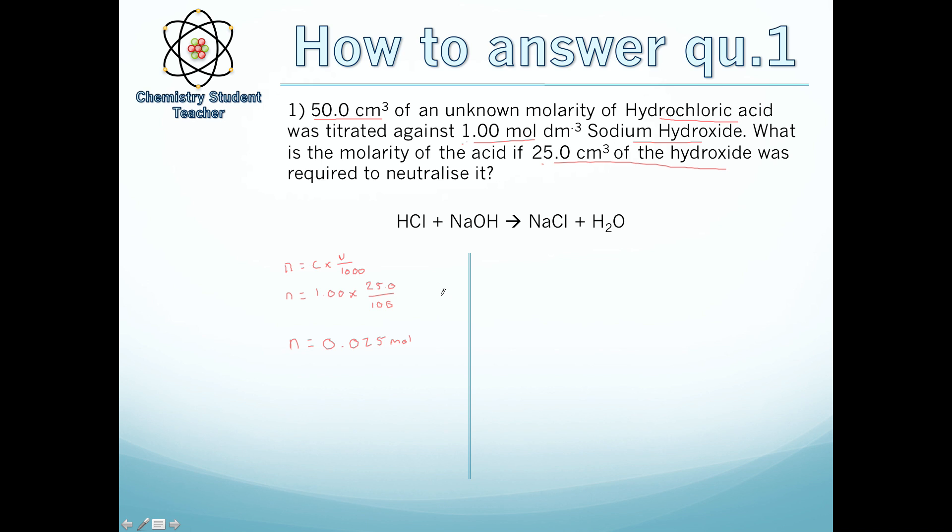We now know we have this many moles of sodium hydroxide reacting. We want to work out the concentration of HCl. That's where this equation comes into play. One molecule of sodium hydroxide reacts with one molecule of hydrochloric acid - that's the same as one mole reacts with one mole. It's a 1:1 ratio. As it's 1:1, the number of moles of HCl is the same as NaOH, meaning 0.025 moles.